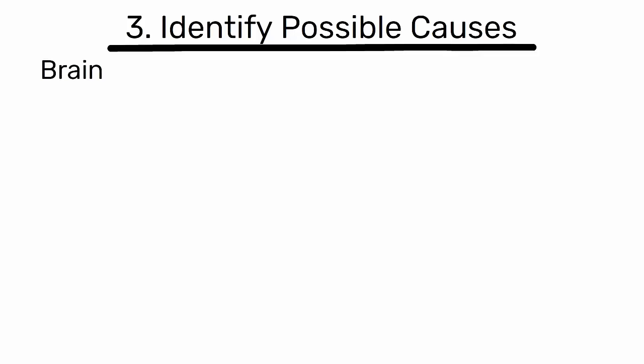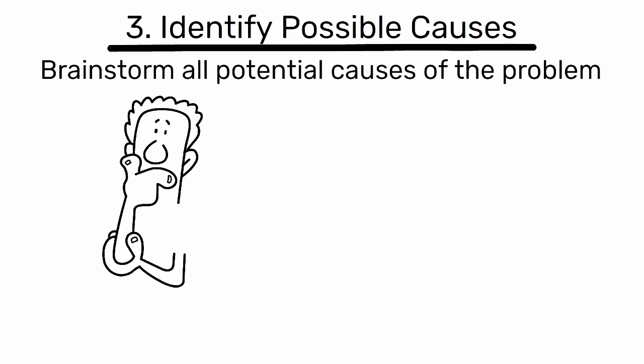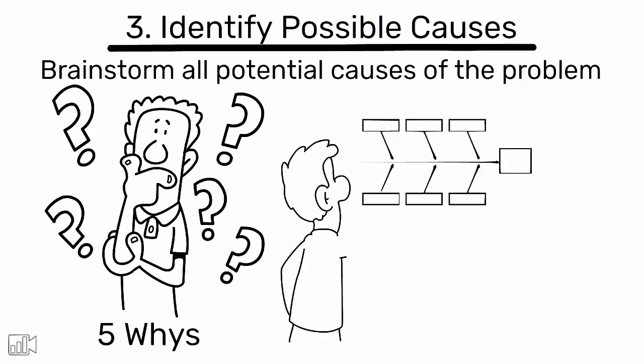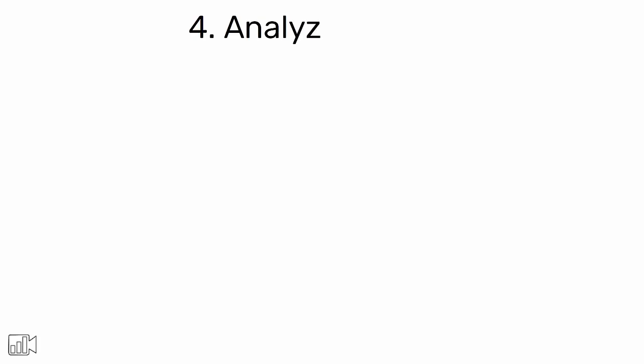Step 3: Identify possible causes. Brainstorm all potential causes of the problem. Use tools like the 5 Whys or a fishbone diagram to help identify these causes.